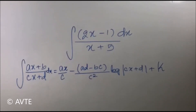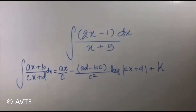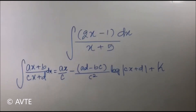Firstly, you can shape up the numerator exactly like the denominator — you take 2 common and then add and subtract 5. The second method is long division, where you put the numerator as dividend and denominator as divisor, do long division, then integrate quotient plus remainder over divisor. The third method is where you put denominator as t, get x as t minus 5, substitute that in the numerator, and change the variable of integration accordingly.